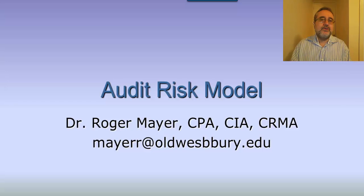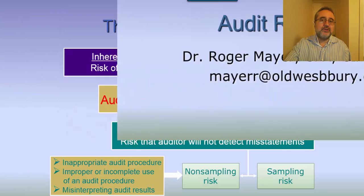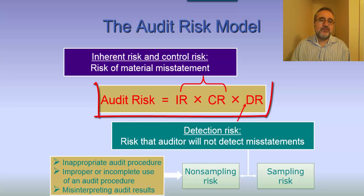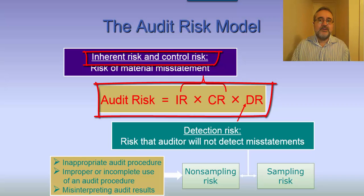We've talked about the audit risk model in other discussions, but what I thought we would do is spend a few minutes talking specifically about how this audit risk model is managed from the auditor's perspective. So we notice that we have the audit risk model: audit risk equals inherent risk times control risk times detection risk.